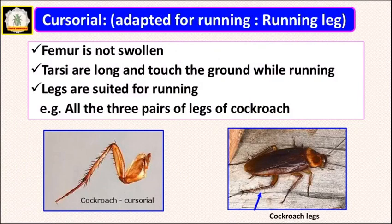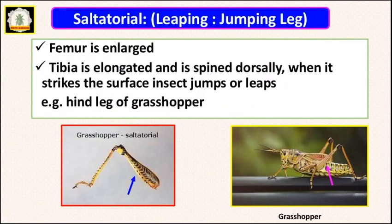The next modification is cursorial legs, which are adapted for running and are also called running legs. They are similar to ambulatorial legs, but in this type the femur is not swollen, whereas the tarsi are long and touch the ground while running. For example, all three pairs of legs of cockroaches are used for running. Notably, tiger beetles are the fastest running beetles and can run about nine kilometers per hour.